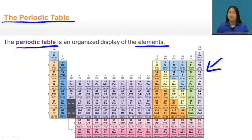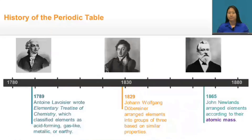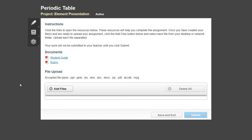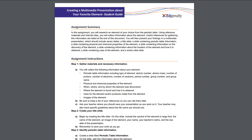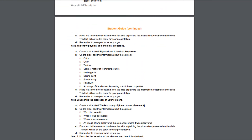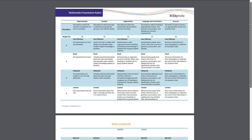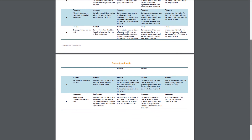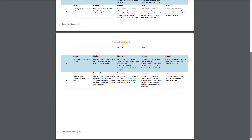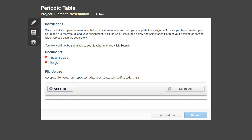Now for our last featured lesson. The Time for Learning Science courses include engaging projects, like this element presentation in MS Physical Science, where students create a multimedia presentation about their favorite elements. These projects include plenty of organizational tools like student guides, and they also include rubrics for students to use before, during, and after their work to ensure they're on the right track. Parents will appreciate these rubrics when reviewing submitted projects.